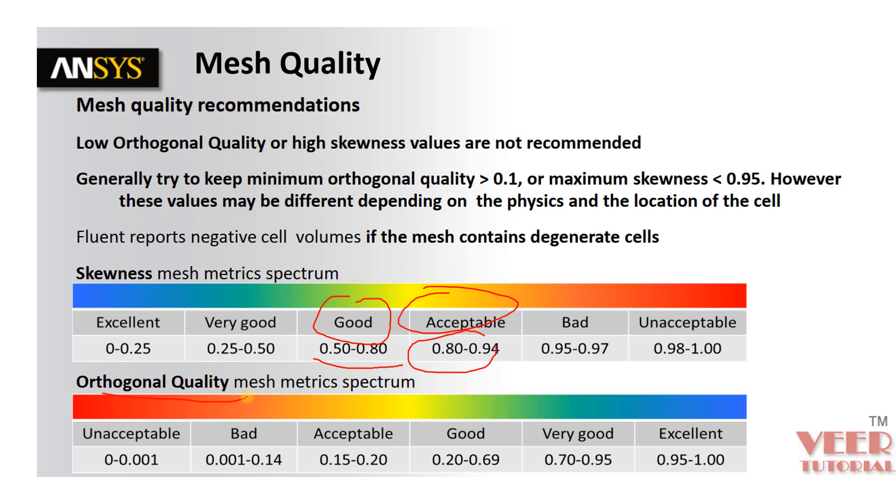Similarly, for orthogonal, 0.15 to 0.2 is acceptable and lesser than this value that is bad and unacceptable. So we have to make sure our element quality lies within this zone.